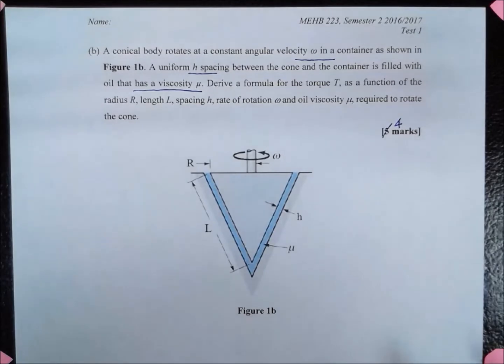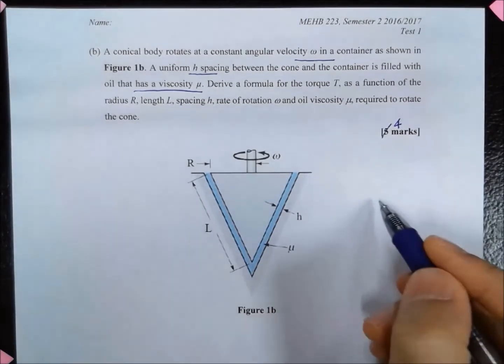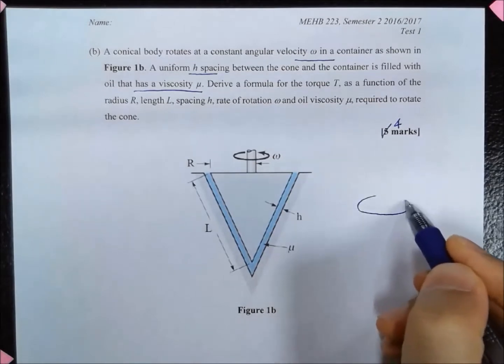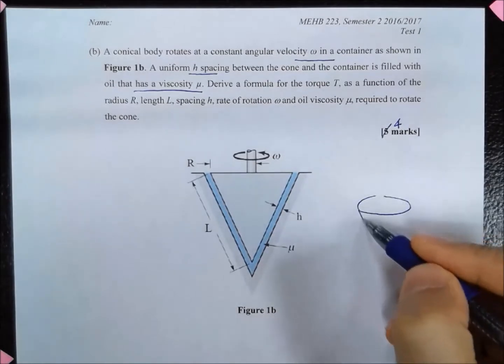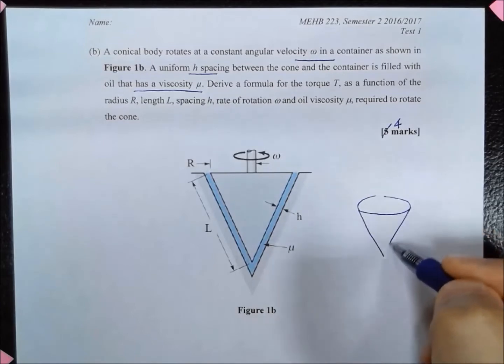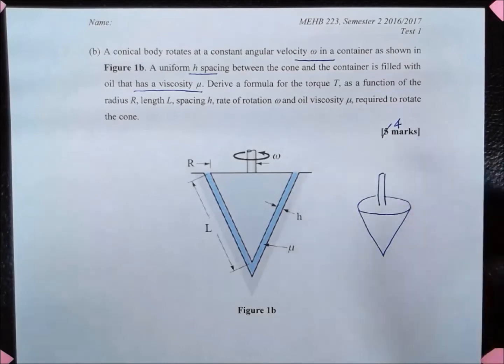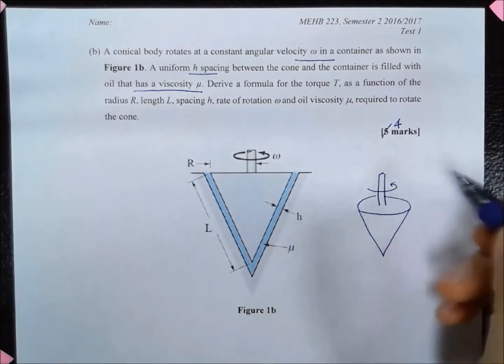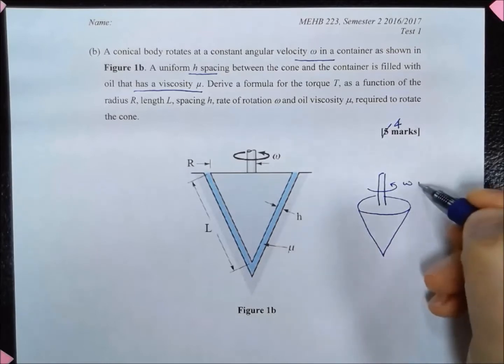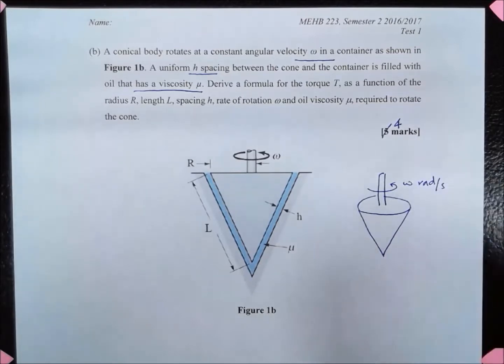If you view it in three dimensions, we have a cone with an axis of rotation here, and it is rotating at omega radians per second.